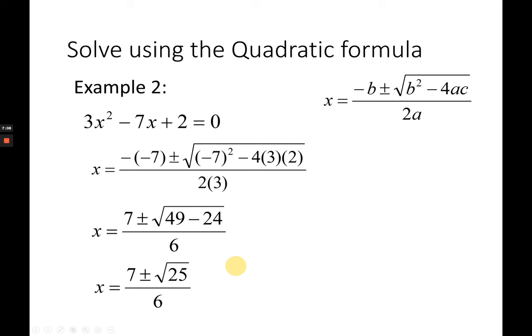Again, 25 is a perfect square. So we have two real rational roots. The first root will take the plus. The second root will take the minus. 7 plus 5 is 12. 7 minus 5 is 2. 12 divided by 6 is 2. 2 divided by 6 is 1/3. And that's your root. First root is 2. Second root is 1/3.